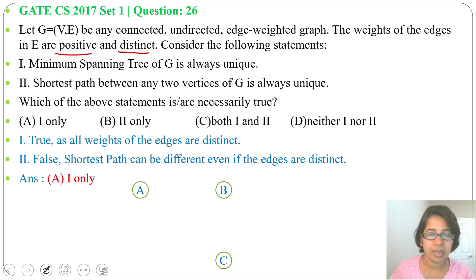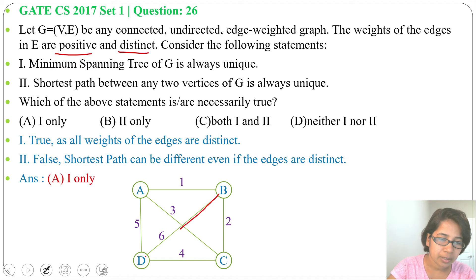Just take this example. There are four vertices and six edges. Now take the shortest path from B to D. So B to D, there are two shortest paths. Here, weight is 6. Here, from B to C, then C to D, weight is also 6. 4 plus 2 equals to 6.